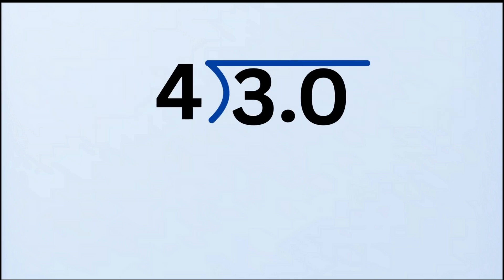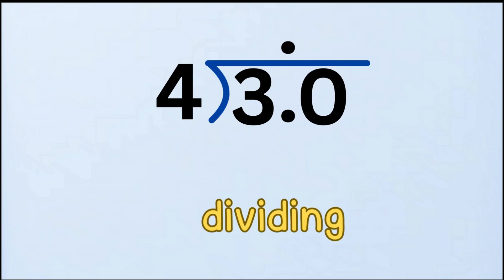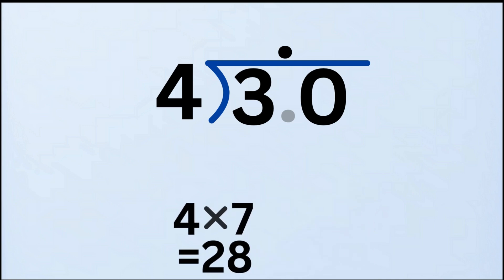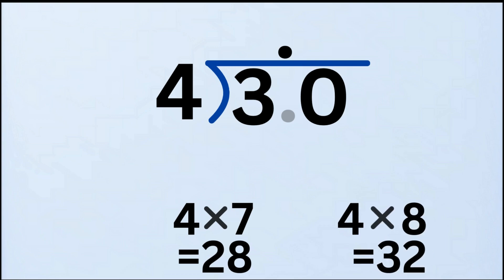Now we continue. We also place a decimal point above the division line in the quotient. That extra zero we added lets us keep dividing until there's no remainder. Pretend there's no decimal point for a moment — we treat 3.0 as 30. How many times does 4 go into 30? The answer is 7 times, because 4 times 7 equals 28. If we tried 4 times 8, it would be 32, and that's too big.